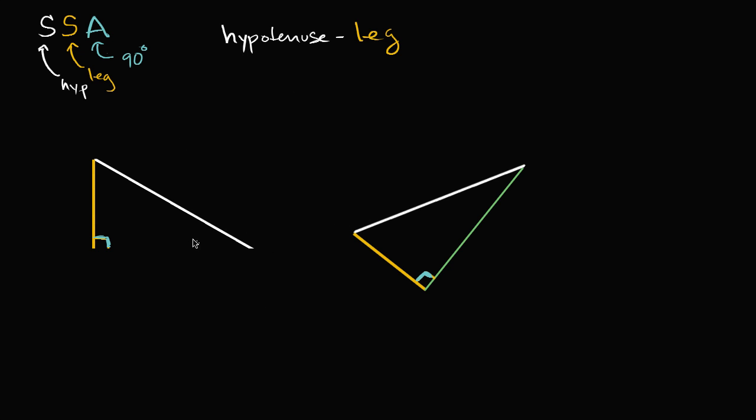We are going to assume that this hypotenuse has the same length as that hypotenuse. Let's say they're both of length C.